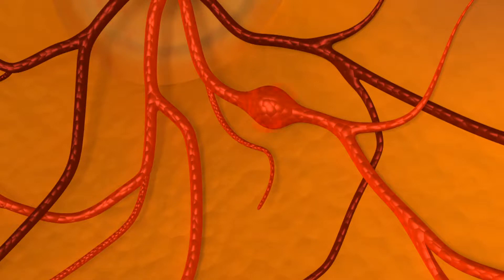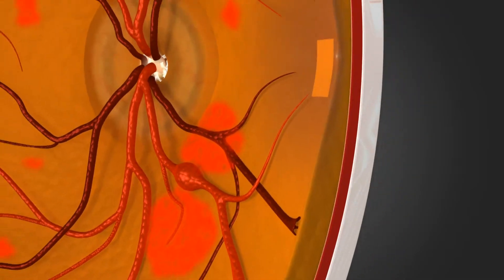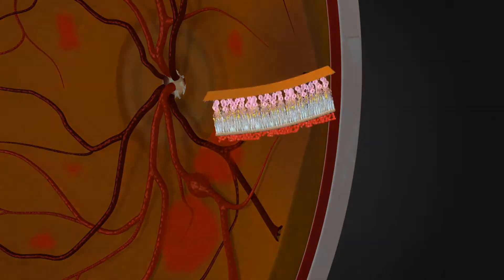An aneurysm is very fragile and can bleed or cause fluid to leak into the retina, the tissue which contains light-sensitive cells in the back of the eye.